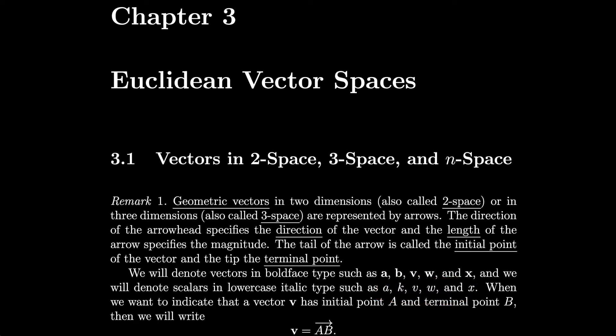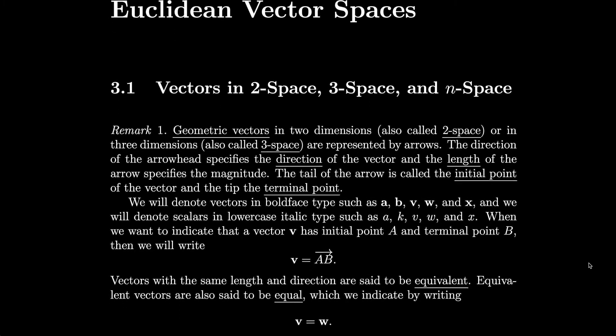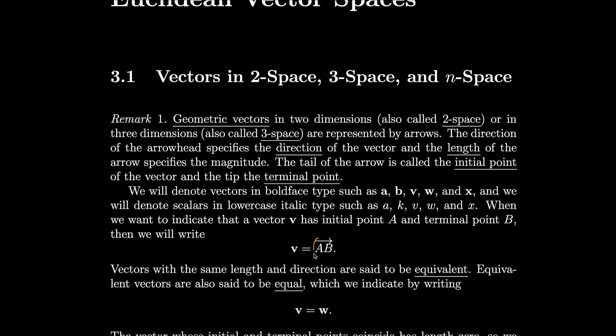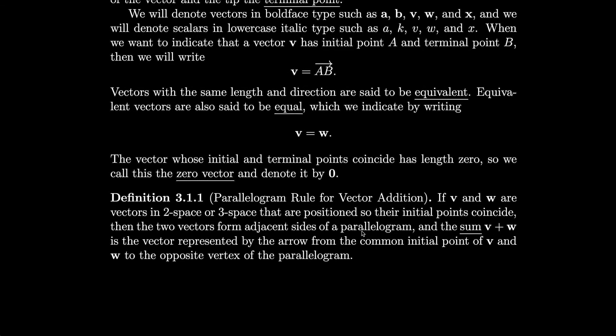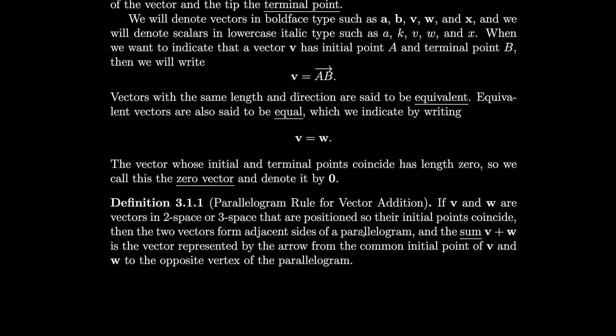You should think of the scalars just like the real numbers you're used to. When we want to indicate that a vector v has initial point A and terminal point B, we write v equals AB, where A is placed near the initial point and B near the terminal point. Vectors with the same length and direction are equivalent, also called equal, written v equals w. The vector whose initial and terminal points coincide has length zero — the zero vector, denoted by bold zero.